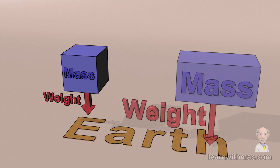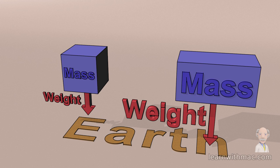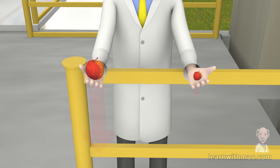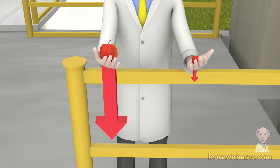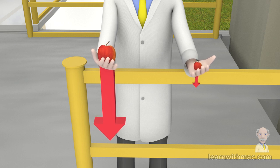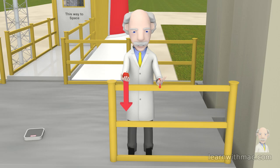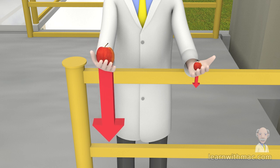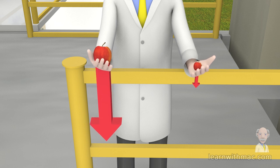The mass of an object is a measure of the amount of matter in the object. It is not the same as the object's weight, which is the attractive force between it and the Earth. However, they are related, since if the mass of the object doubles, the weight of the object will double. In the case of these two apples, there is a gravitational force acting on each of them from Earth — this is their weight. The large apple has a weight 10 times that of the small apple, due to it having 10 times the mass of the small apple.